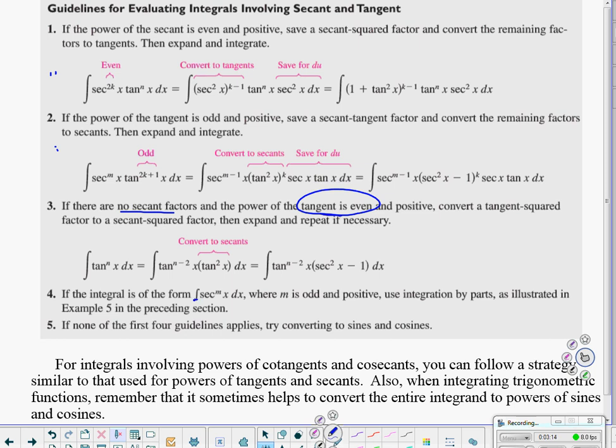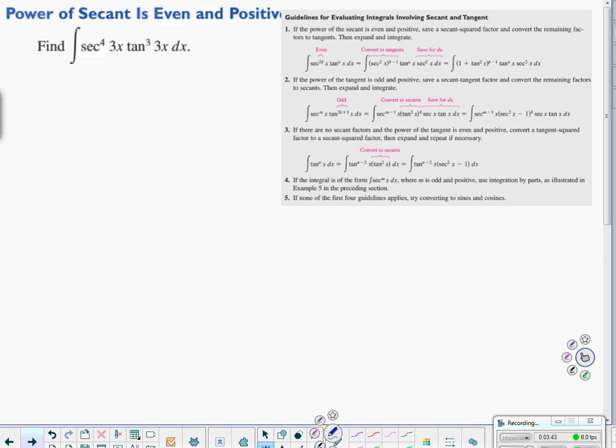If you have a secant that is an odd power, then it's best to use integration by parts, and that kind of gets interesting. If none of these four techniques cover what you need, what you might want to do is just go back to the basics and convert into sine and cosine. So on the back side of your notes, I have three problems. We're going to try and work through those three.